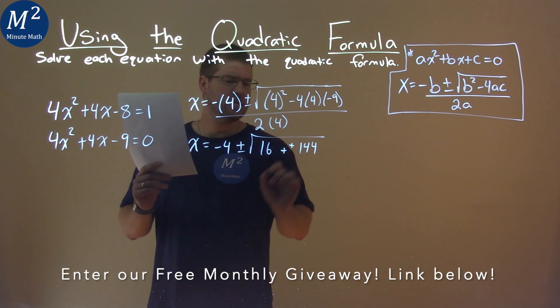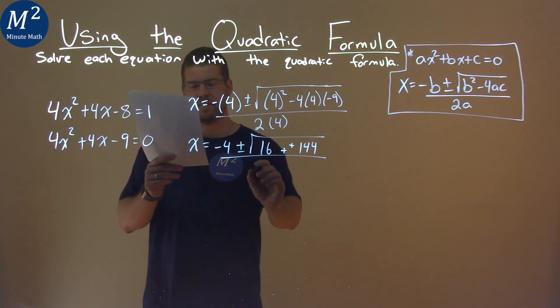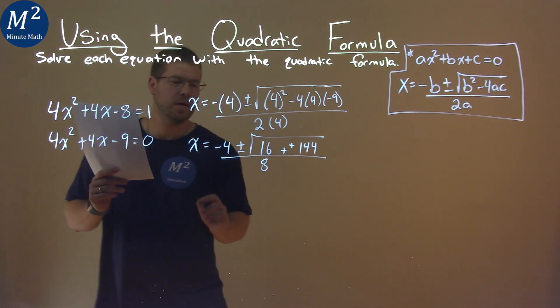Well, two negatives make a positive here, so it's plus a positive now. And then 2 times 4 in the denominator is 8. Keep on going,